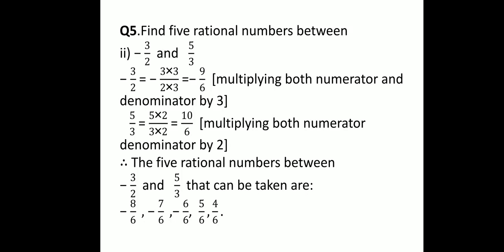Coming to question number 5: find 5 rational numbers between minus 3 by 2 and 5 by 3. We need to make the denominators the same. Multiply minus 3 by 2 by 3 numerator and denominator to get minus 9 over 6, and multiply 5 by 3 by 2 to get 10 over 6. Now we can easily find 5 rational numbers between minus 3 by 2 and 5 by 3. I hope all these questions are clear to you. Please complete your homework in your homework notebook from your NCERT book. Thank you.